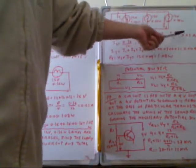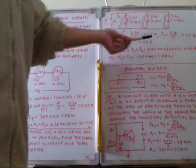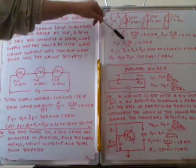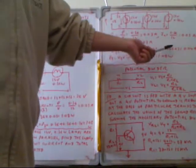I1 can be calculated as P/V = 0.36/12 = 0.03 amperes. I2 = P/V = 0.36/12 = 0.03 amperes. I3 = P/V = 0.36/12 = 0.03 amperes.